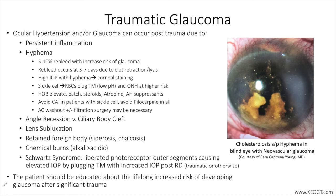Causes of IOP rise post-ocular trauma include persistent inflammation, which is often temporary post-trauma, but can be chronic with resulting changes to the drainage angle from inflammatory cell deposition and/or synechiae formation. These changes can lead to lasting elevation in intraocular pressure and development of glaucomatous optic neuropathy. Strict control of inflammation with steroids can decrease the chance of synechial angle closure.